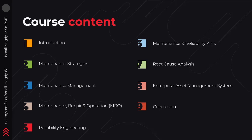This course consists of nine chapters. In the first chapter, we are going to have an introduction about the three main components of the course, which are maintenance management, reliability engineering, and asset management. In the second chapter, we will learn the different strategies of maintenance as well as the evolution of maintenance techniques, starting from corrective maintenance, preventive maintenance, productive maintenance, and finally reliability centered maintenance.